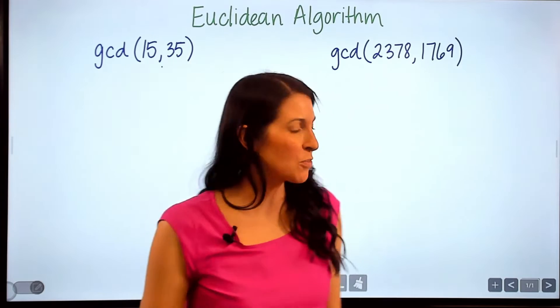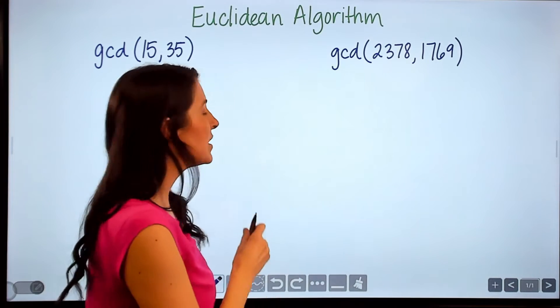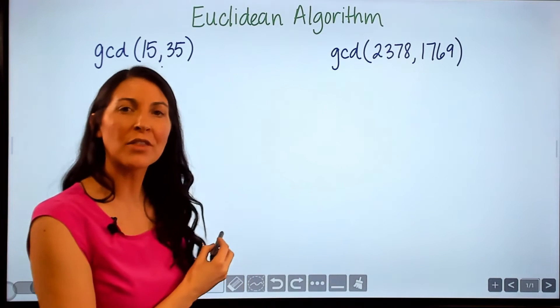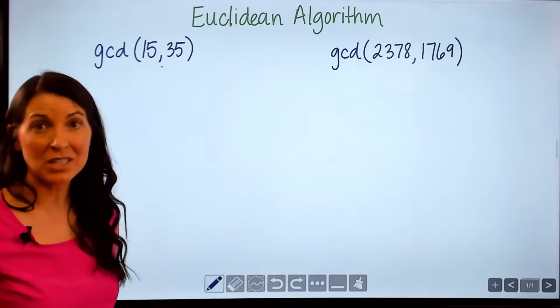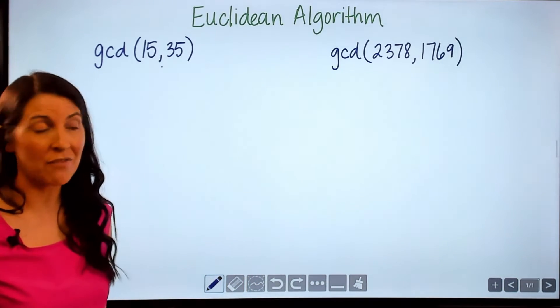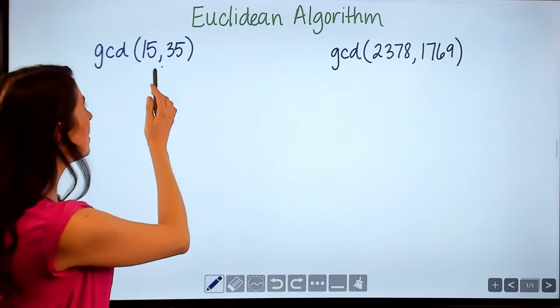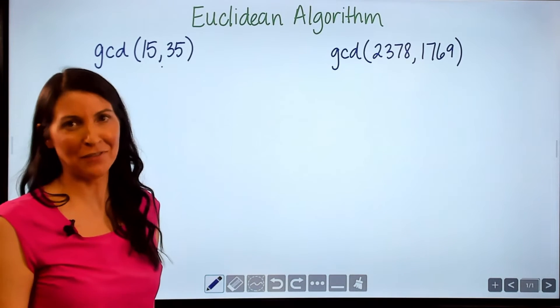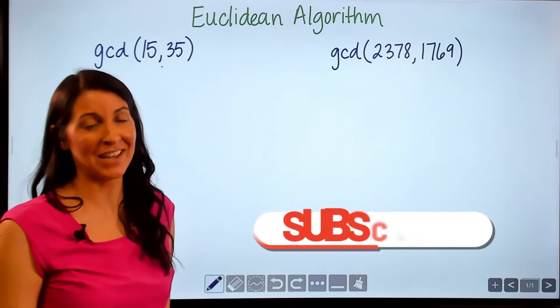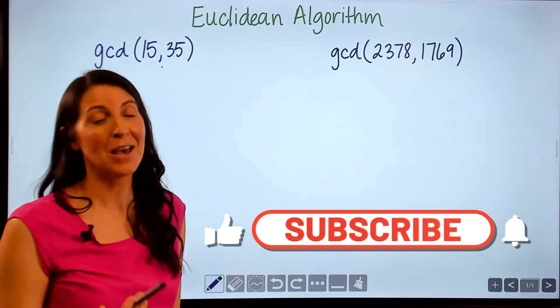All right, let's go ahead and try this first problem. In this problem I want to find the greatest common divisor between the numbers 15 and 35. Now some of you may look at this and know the greatest common divisor of 15 and 35 is 5.